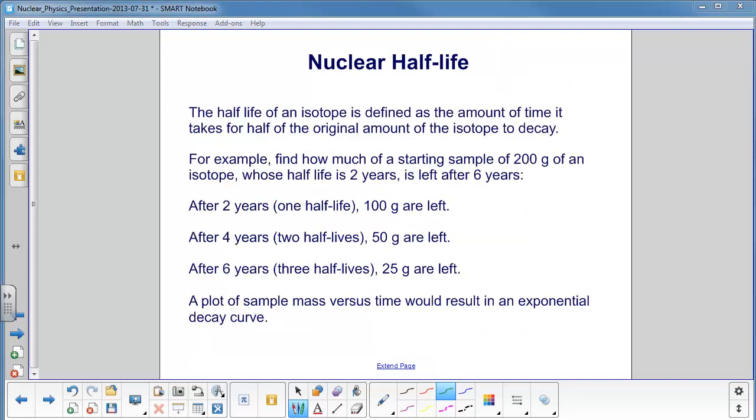The half-life of an isotope is defined as the amount of time it takes for half of the original amount of the isotope to decay. Let's take an example. We have 200 grams of an isotope, and its half-life is two years. We want to find out how much is left after six years.